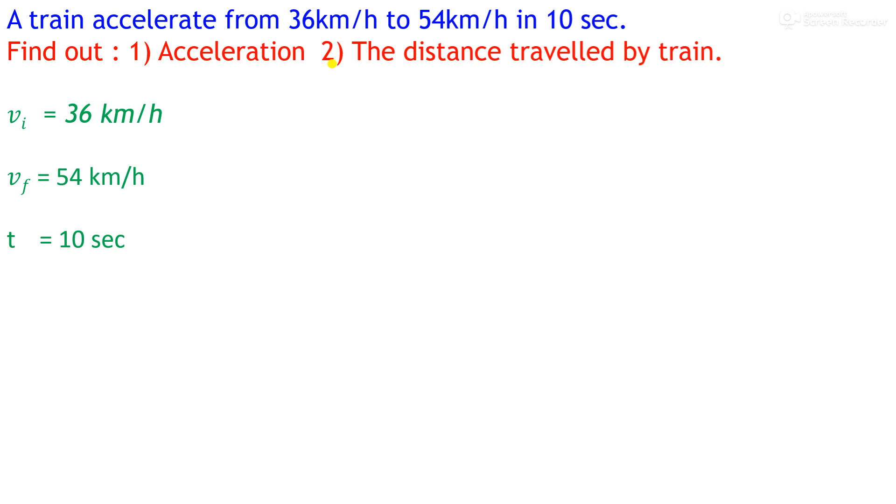I have converted 36 km/h and 54 km/h into meter per second. For 36 km/h, we multiply 36 by 1000 and divide by 3600 seconds, which gives us 10 m/s as the initial velocity. In the same way, the final velocity after solving is 15 m/s.